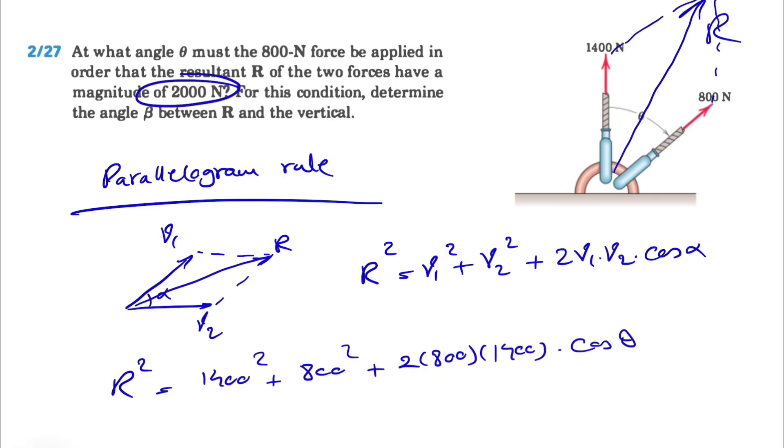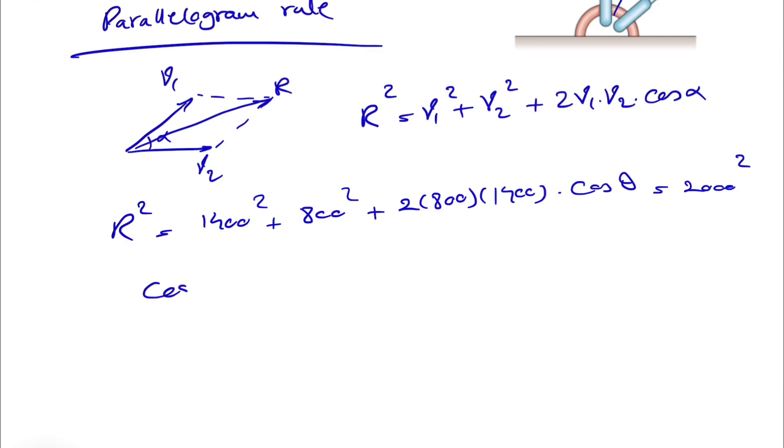From the question we know that resultant has a magnitude of 2000, so this will be 2000 squared. If you calculate this, we'll get cosine of theta equals 0.625, and theta will be cosine inverse of 0.625 which is 51.3 degrees. That's the first part of the question.